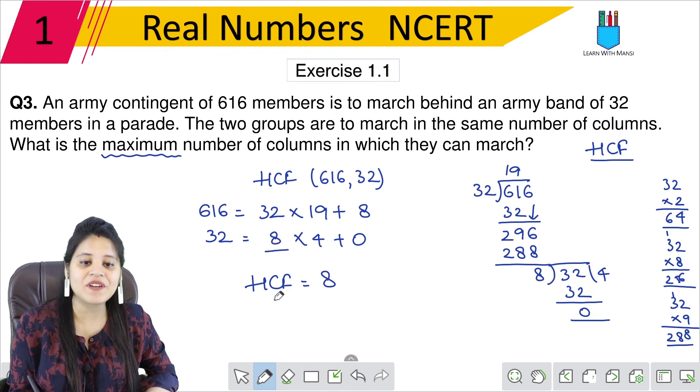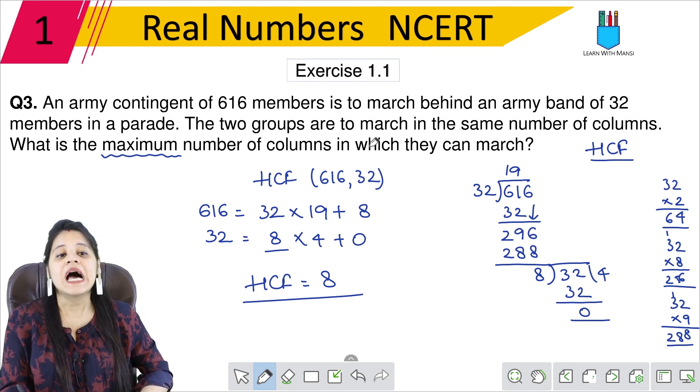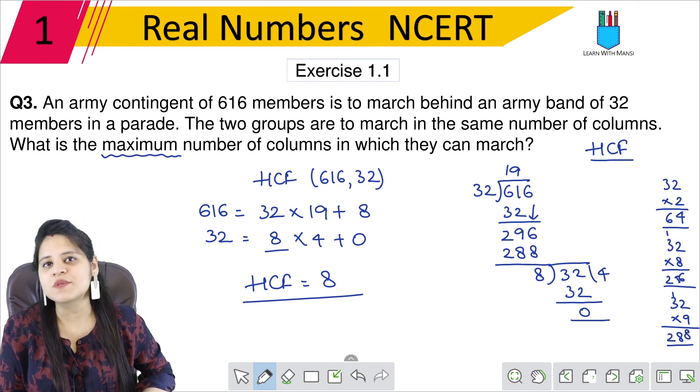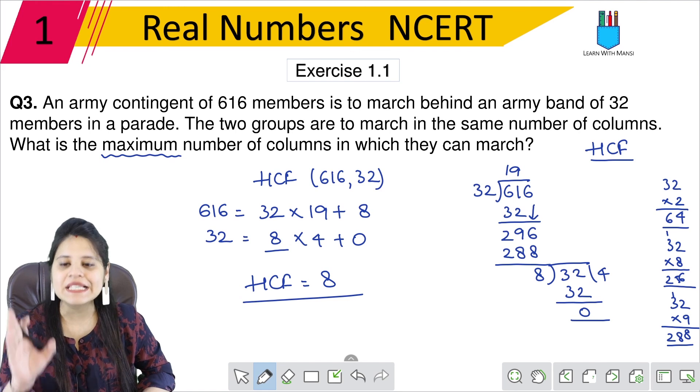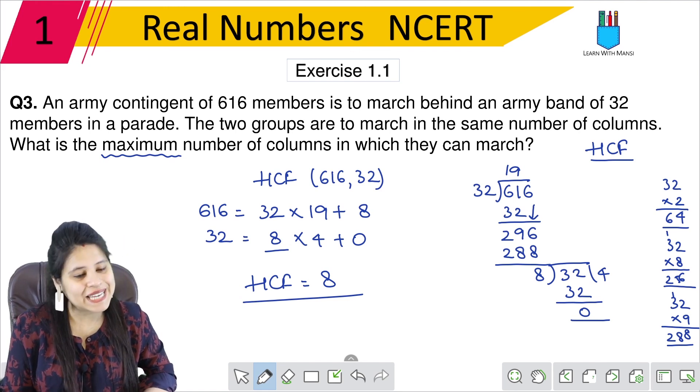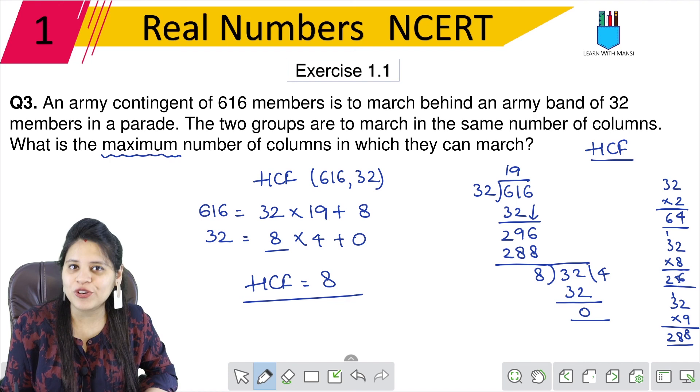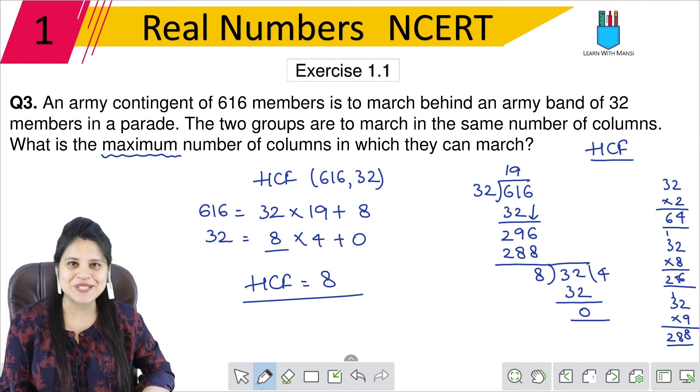Which means if they march in 8 number of columns, they can march equally same number of columns. So this is our question number 3. Now we will move to the next question.